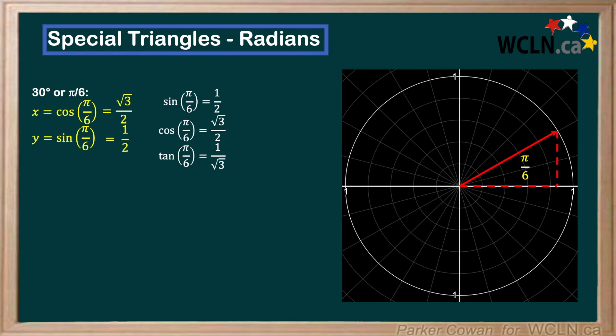We also see sine pi over 6 is equal to 1 over 2. So, let's plug that in for y as well. Plotting these points on the unit circle gives us root 3 over 2, 1 over 2.